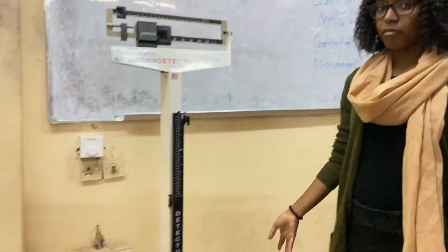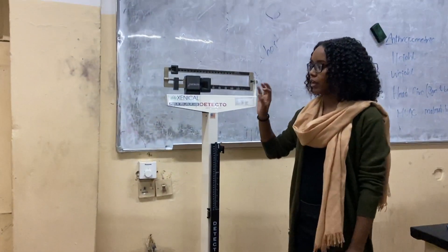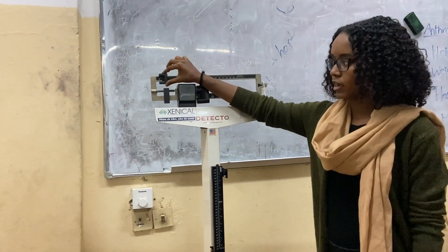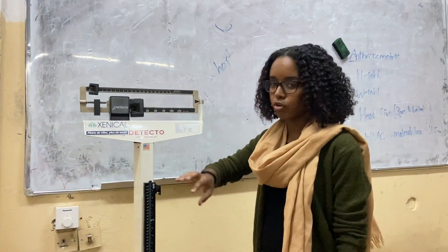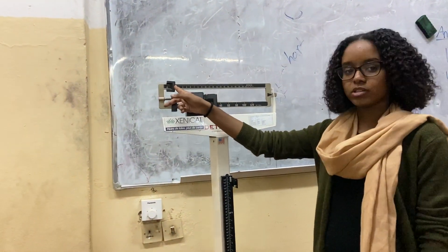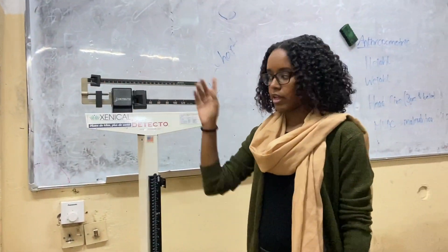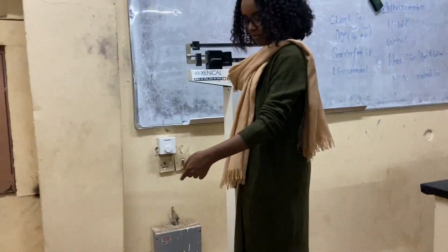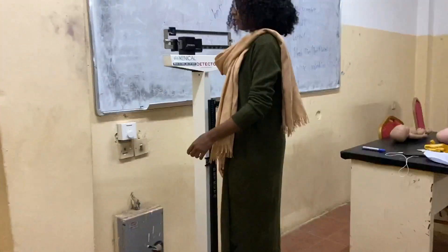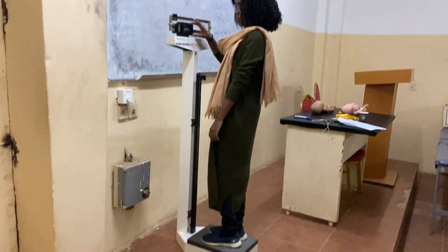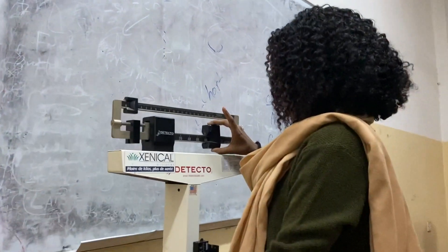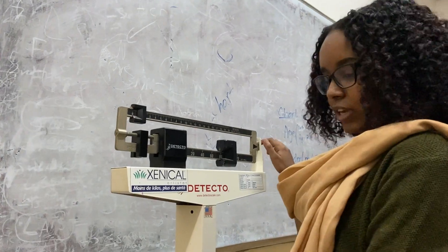This is the scale for the height and weight. The most important thing is to always make sure that the smaller one is at zero. So, make sure you take the smaller one to zero. Then you ask the patient to step on it. You're going to be moving the big one — move the big one more than the weight of the patient.